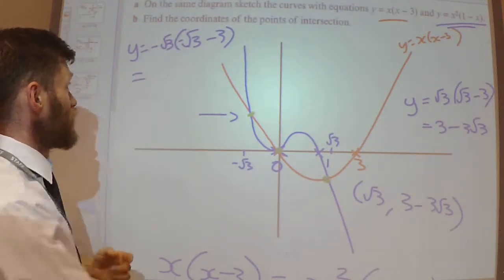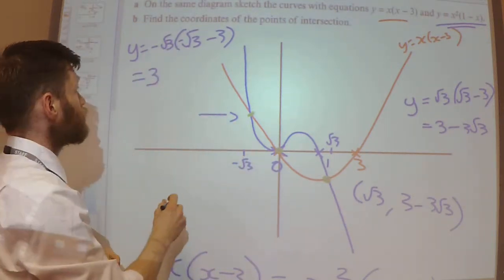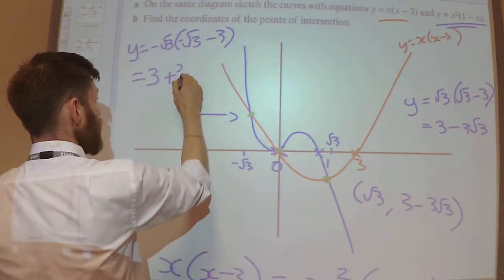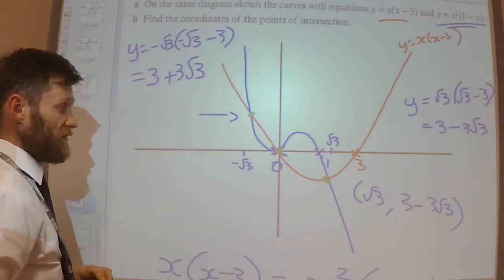-√3 times -√3 is just 3. And then we get -√3 times -3. So I get a +3√3.